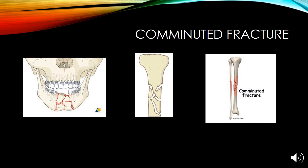In a comminuted fracture, the bone gets broken into three or more fragments. Since a large amount of pressure and force is needed to fragment bones, breaks like these occur after a high impact trauma, such as a motor vehicle accident or a fall from a tall building.